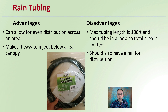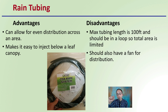So we have rain tubing. The advantages are it can allow for even distribution across the area, and it also makes for an easy point of injection below the leaf canopy. It's basically tubing that has small little pinholes in it at equal intervals. However, the disadvantages of using this system is that the max tubing length is 100 feet, and it should be in a loop, so the total area is limited, particularly for large growing operations.